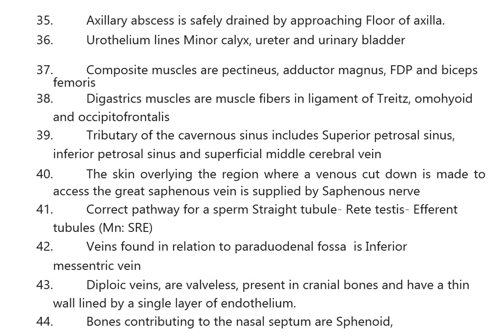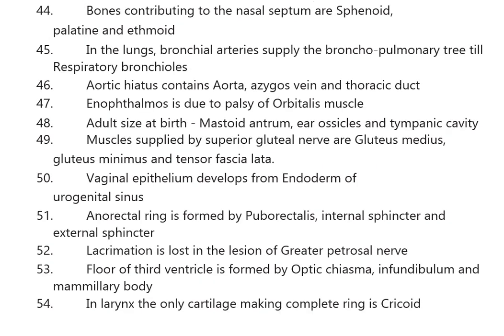Bones contributing to the nasal septum are the sphenoid, palatine, and ethmoid. In the lungs, bronchial arteries supply the bronchopulmonary tree up to the respiratory bronchioles. The aortic hiatus contains the aorta, azygos vein, and thoracic duct.